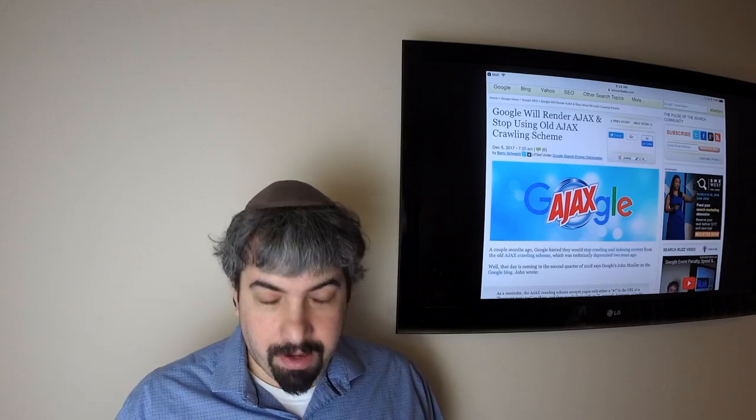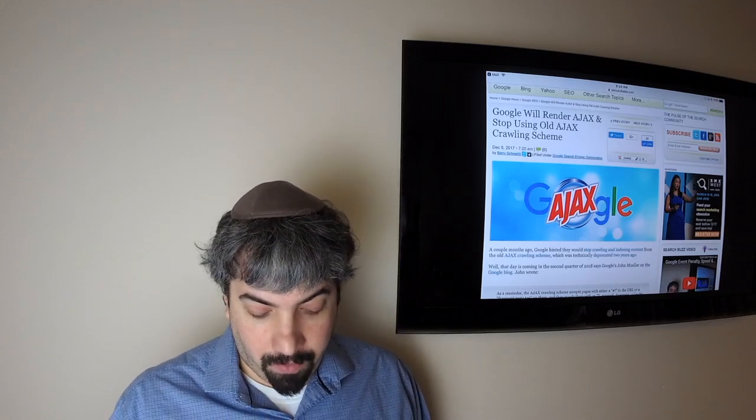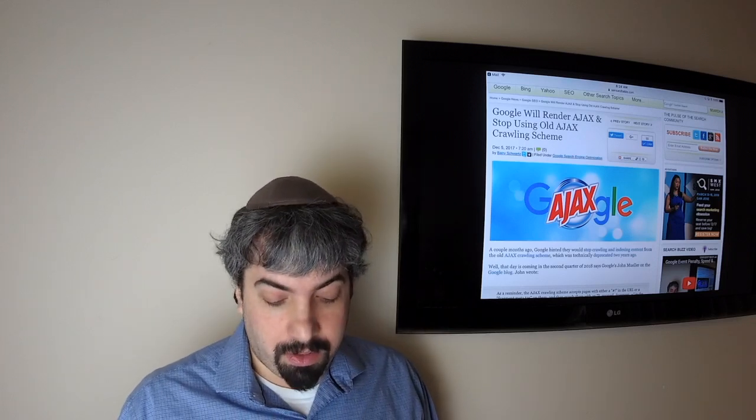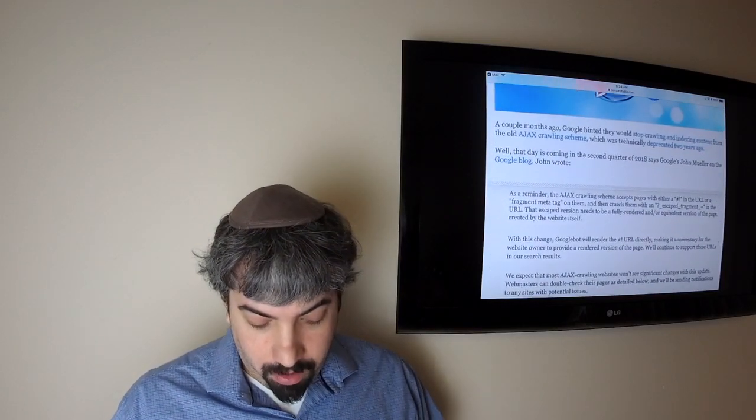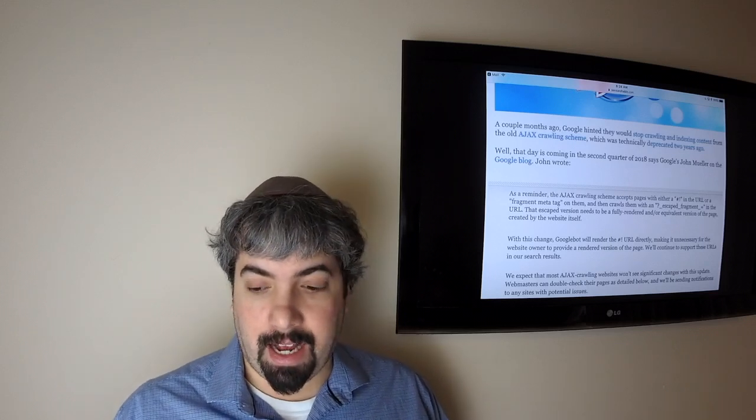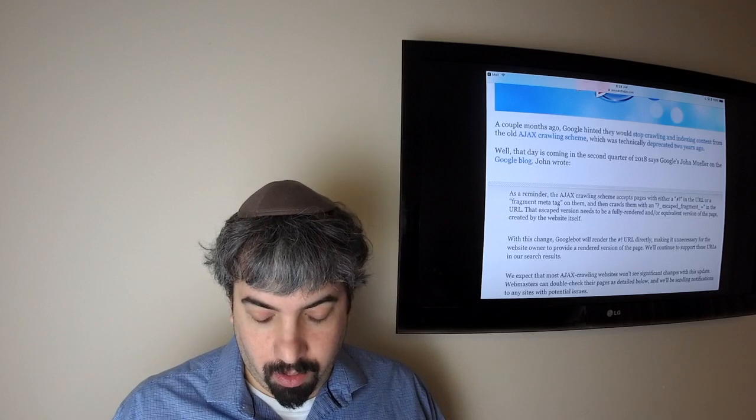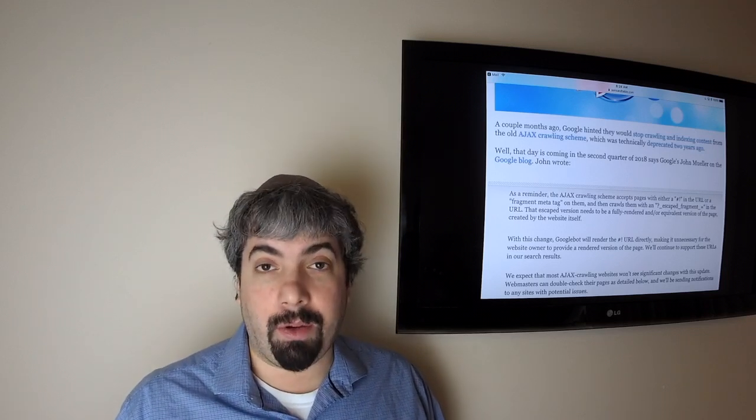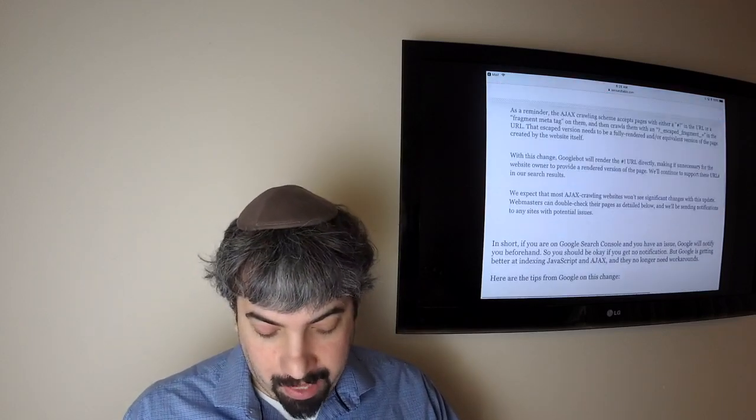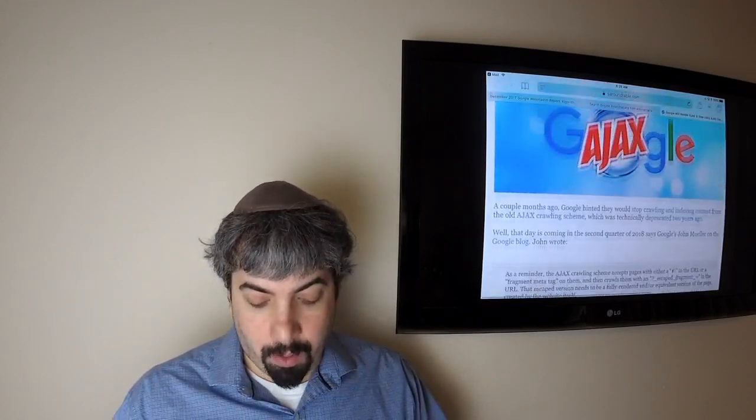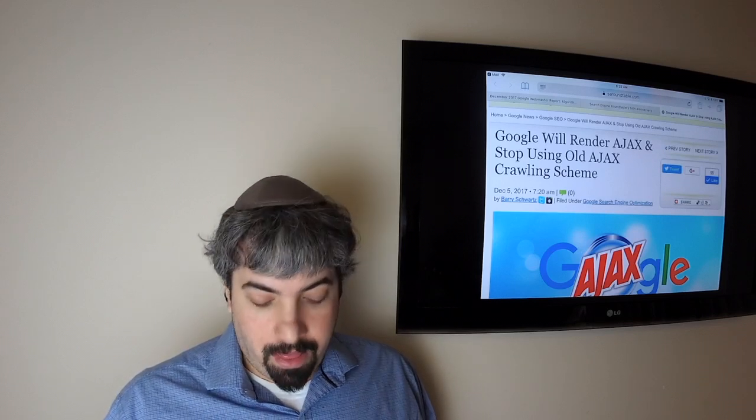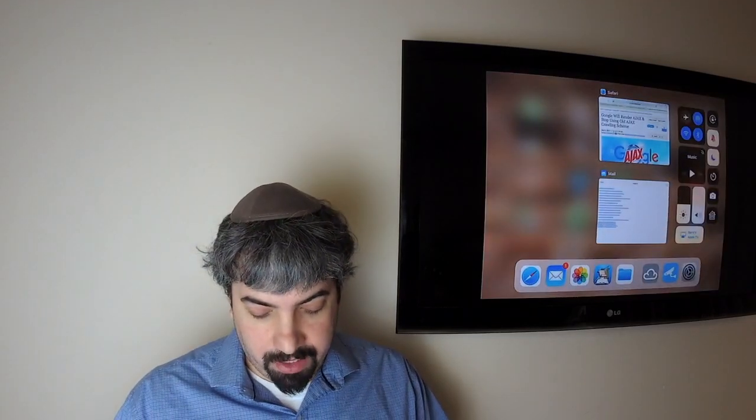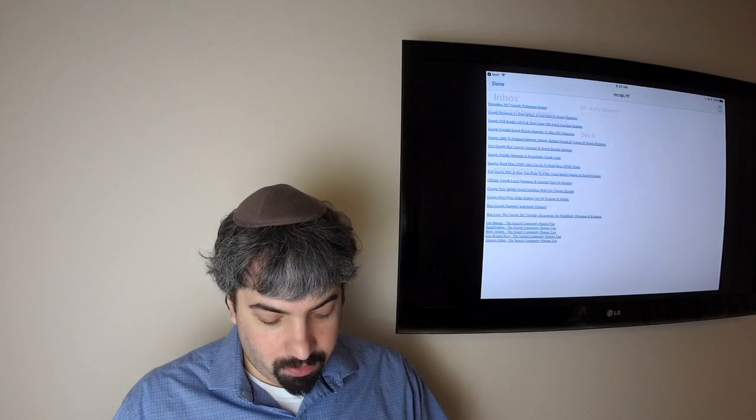Google announced that they will render AJAX natively these days going forward sometime in the second quarter of 2018. That means they will stop using or stop crawling the old AJAX crawl scheme. A couple months ago they actually hinted that they would stop crawling and indexing content from the old AJAX crawling scheme, which they deprecated about two years ago officially. John Mueller wrote a blog post at the Google blog describing what the changes are and what to look out for if you have an AJAX website. I would definitely recommend that you register your website with Google Search Console and make sure it's all verified because Google will be sending notices to those AJAX-based sites that have these issues.